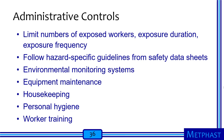Administrative controls include limiting the number of exposed workers, exposure duration, and exposure frequency. Workers should follow hazard-specific guidelines from safety data sheets, use environmental monitoring systems, ensure equipment is properly maintained, follow good housekeeping procedures, maintain personal hygiene — particularly washing hands before eating or drinking — and receive proper training on the hazards they may face and how to protect themselves.